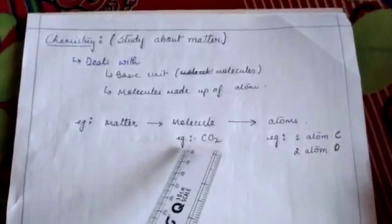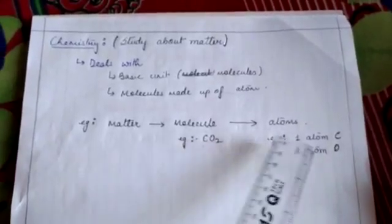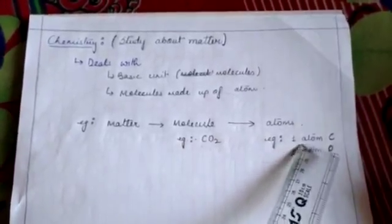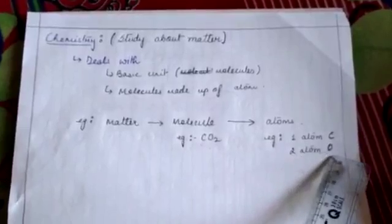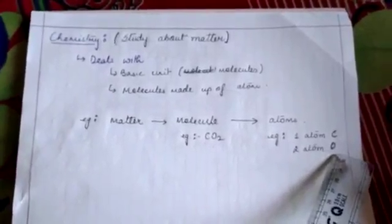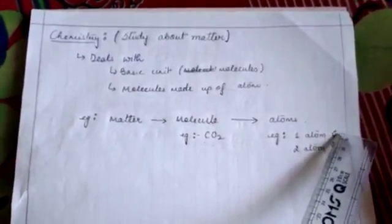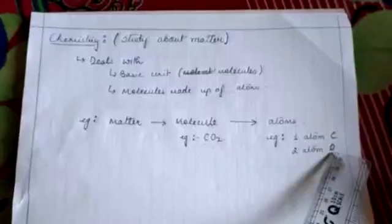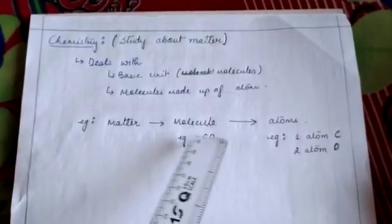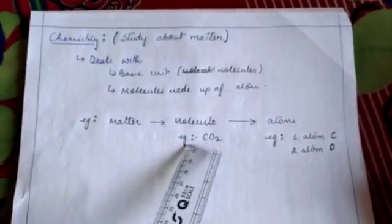You can see over here that carbon dioxide is made up of one atom of carbon and two atoms of oxygen. When one atom of carbon combines with two atoms of oxygen, it makes up carbon dioxide.